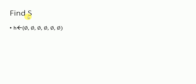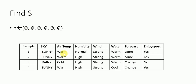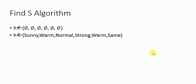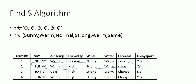This is the first instance given to Find-S. All attributes have their values. Since this is the first positive instance, the null hypothesis is replaced by: sunny, warm, normal, strong, warm, same. This becomes h. The next instance is then taken, and its result is also positive (yes).